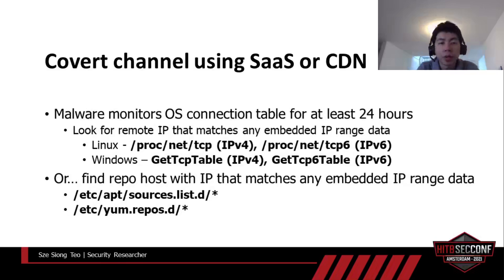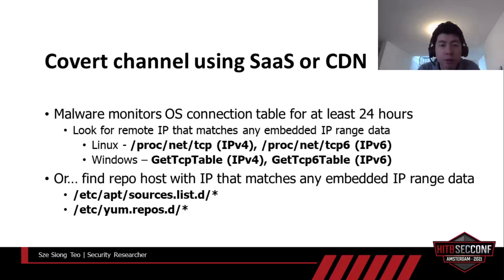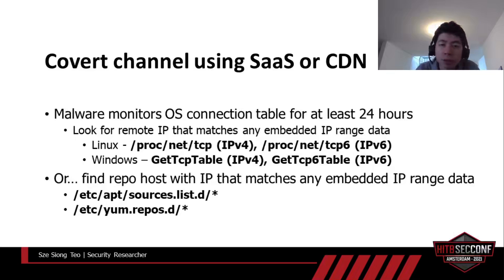In the supply chain malware, how it establishes the C&C channel is the crucial part to evade IDS detection. It needs to monitor all operating system connections for at least 24 hours and continuously look for any remote IP address that matches any of the embedded IP range data. This should be done as often as every one to two seconds — it's a very lightweight operation and won't cause any CPU spike. On Linux, this can be achieved by reading /proc/net/tcp as a file. On Windows, the same information can be retrieved through the GetTcpTable API call. If no matching IP address is found after 24 hours, the next step is to look into the operating system's package repository config for hostnames with IP addresses matching any of the embedded IP range data.